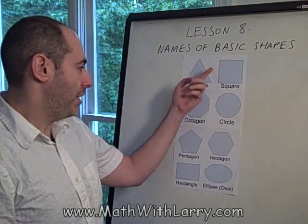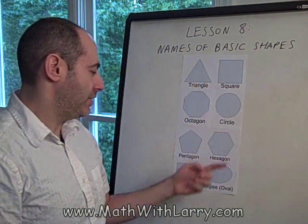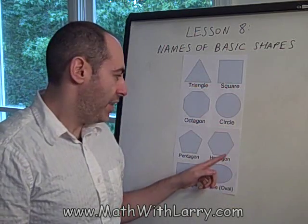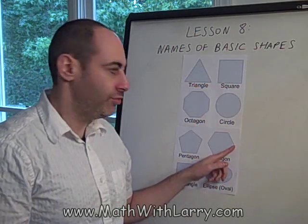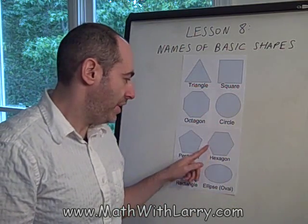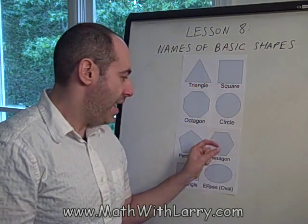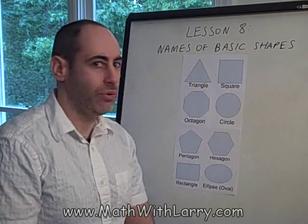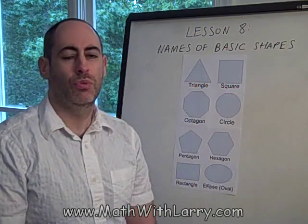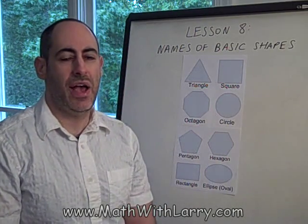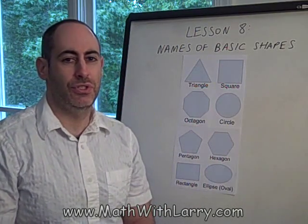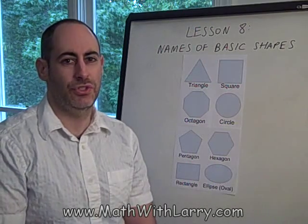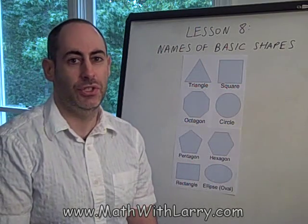So, for example, the triangle, the square, the hexagon — these are all polygons. They have no curves, they have straight edges, and all the edges connect. There are no gaps. The word polygon actually just means many sides — a polygon is just a many-sided shape.